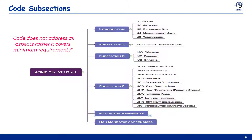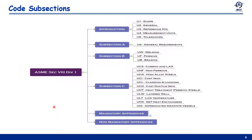Those aspects which are not specifically addressed should not be considered prohibited. When engineering judgment is used, it should be consistent with the philosophy of the code, and such judgment must never be used to overrule mandatory requirements or specific prohibitions.